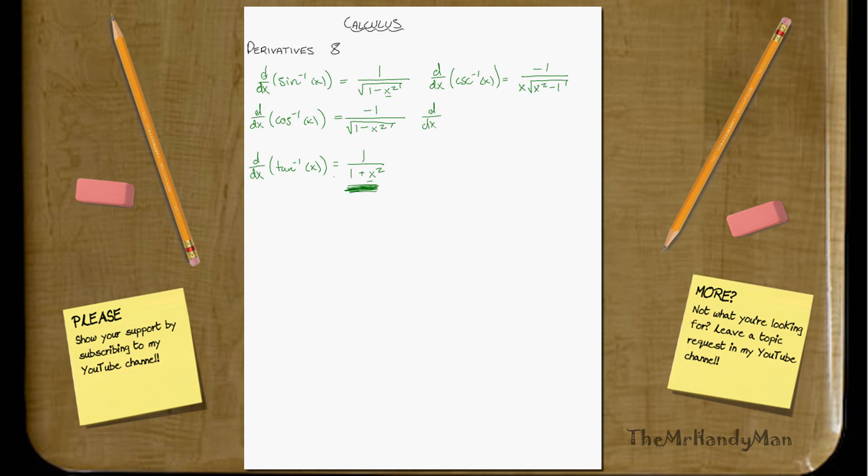So, d/dx secant negative 1 over x equals 1 all over x times the square root of x squared minus 1. Looks similar, huh? Starting to notice a pattern between sines and cosine base trig functions.